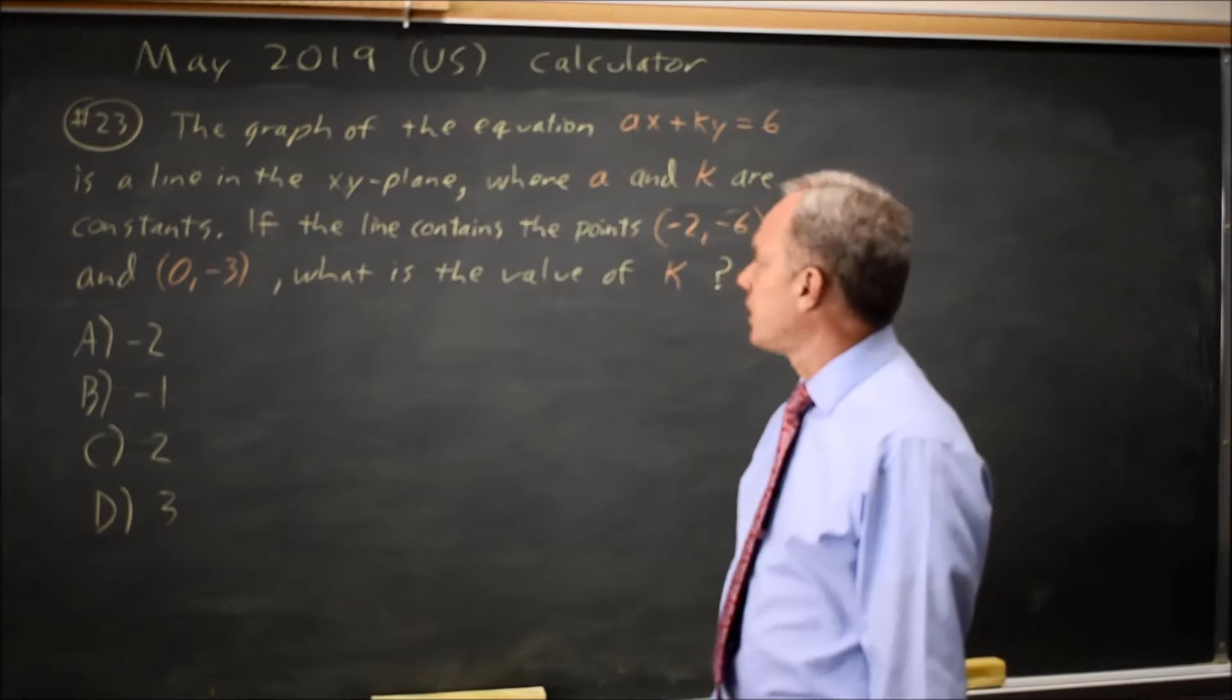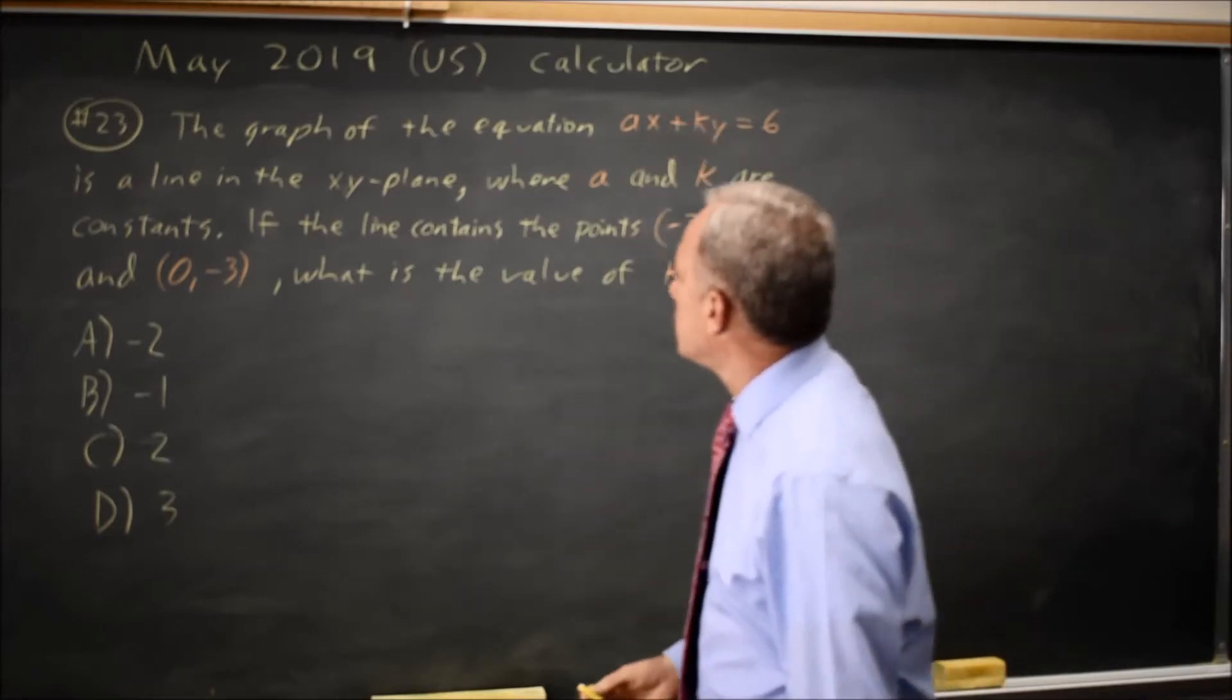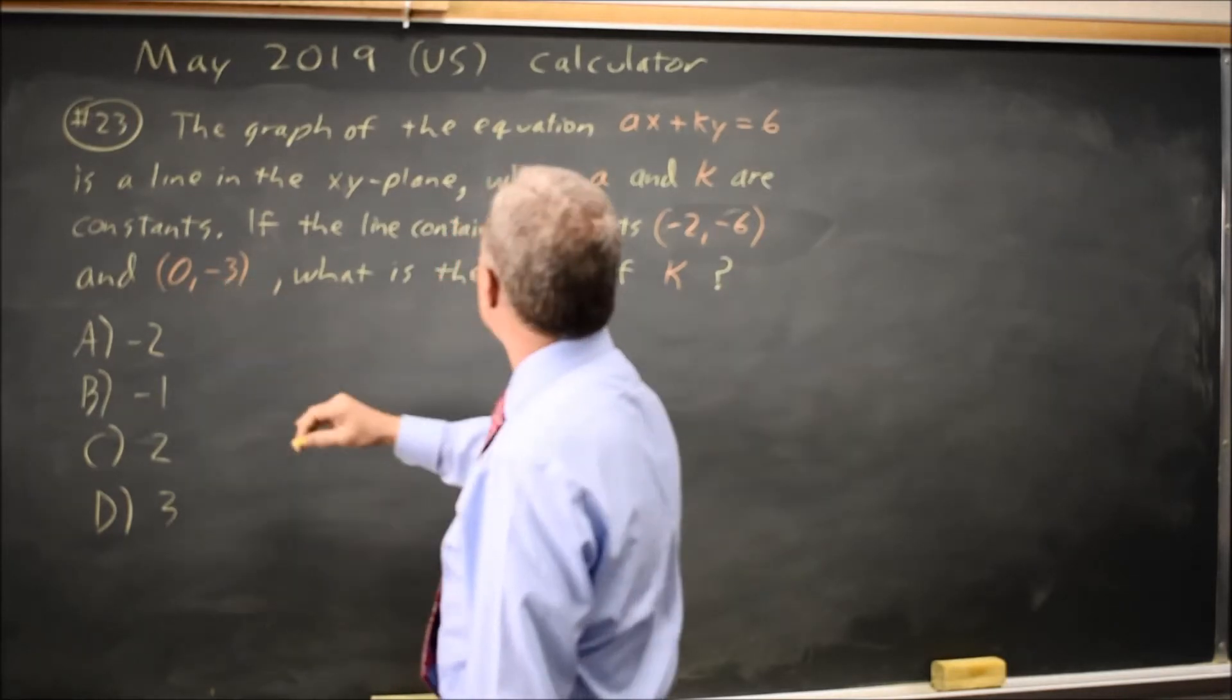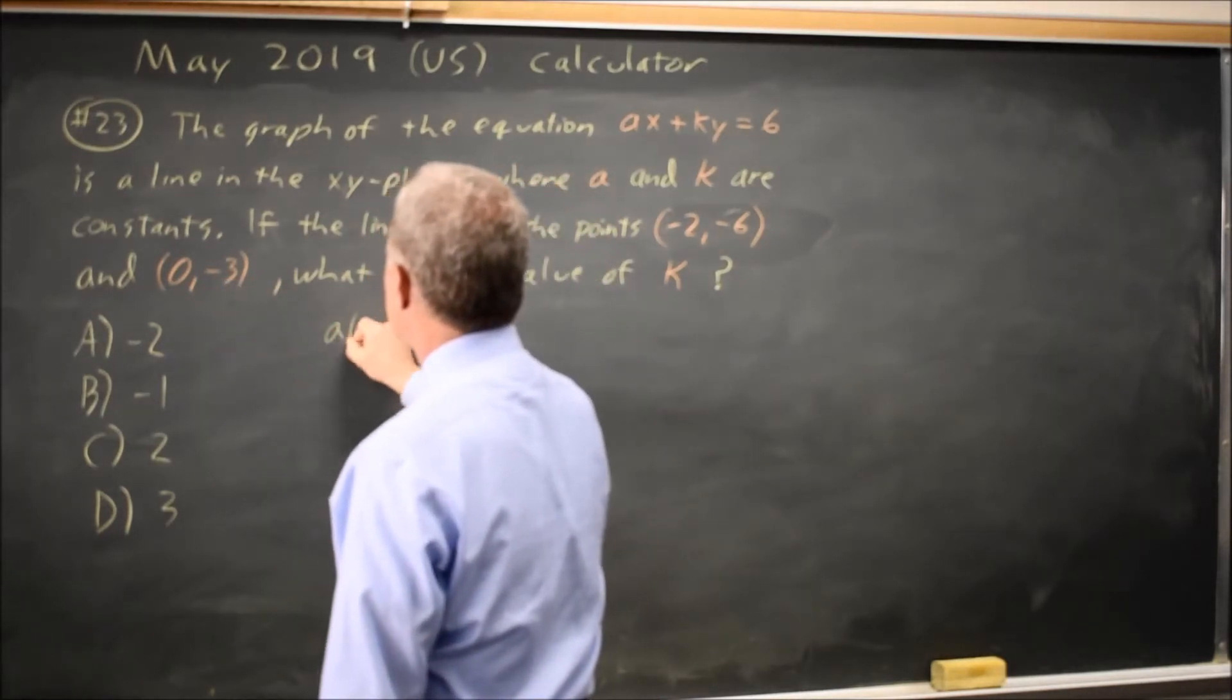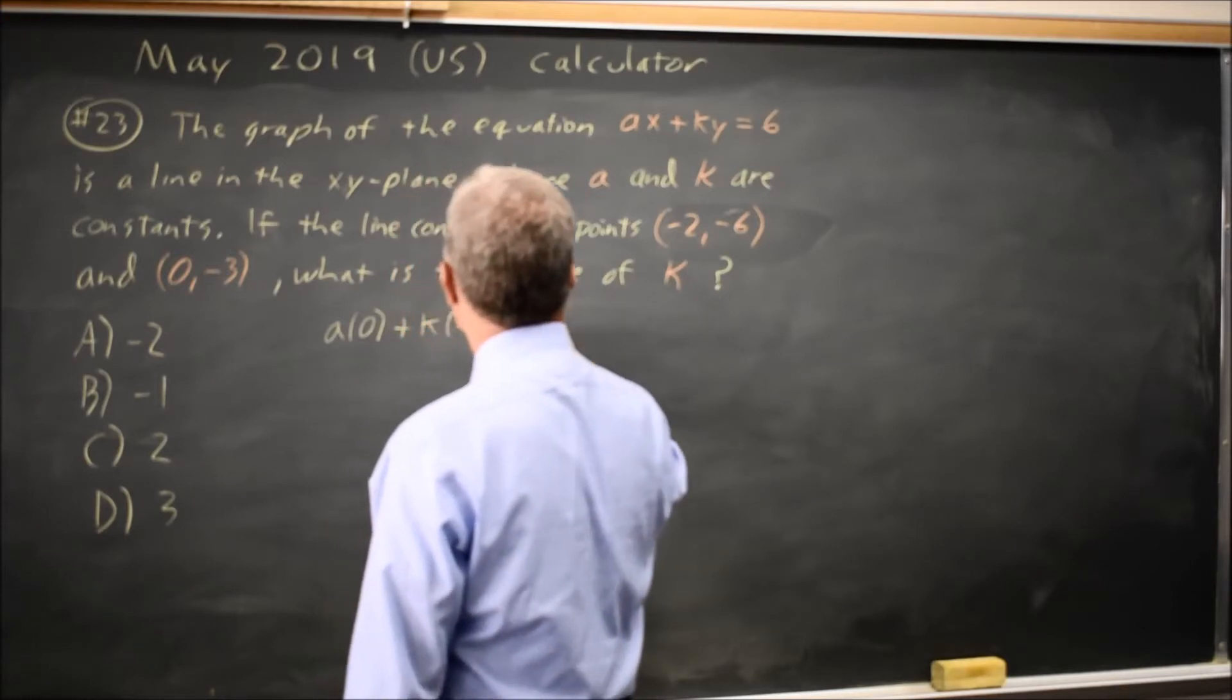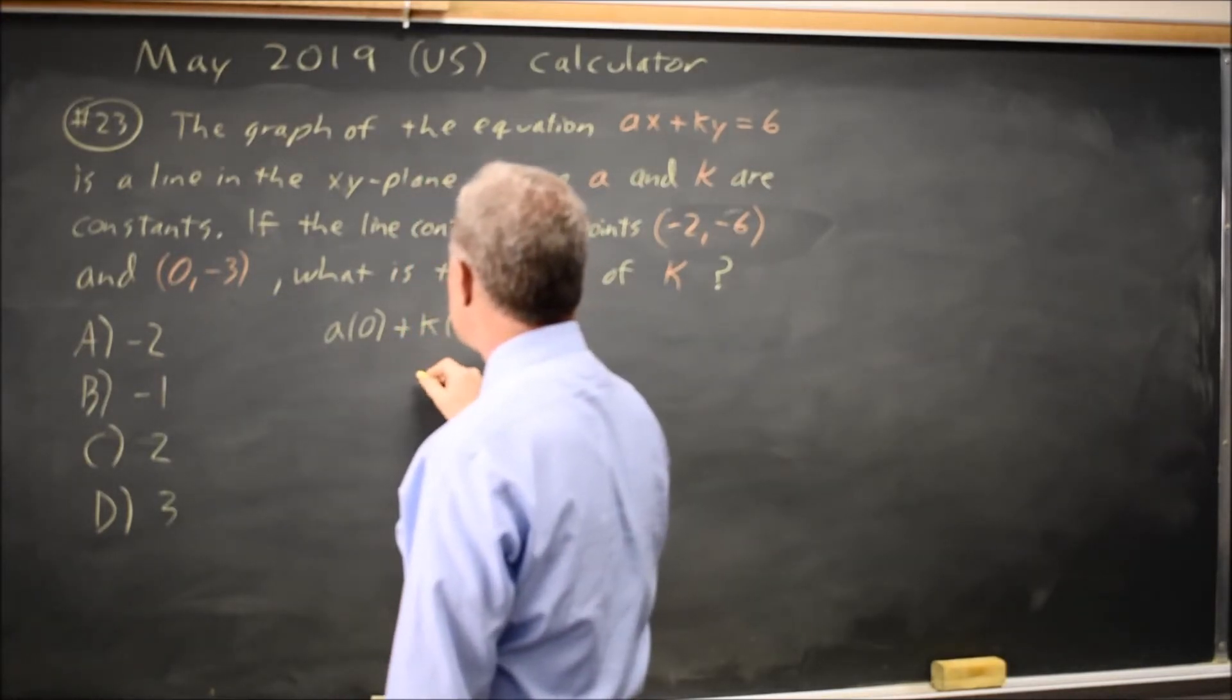and they ask for the value of k in this equation. If I substitute in the second point, that's A times 0 plus k times negative 3 equals 6. A times 0 is 0,